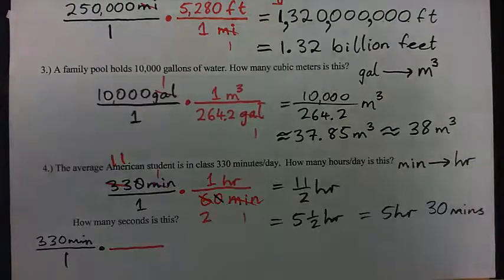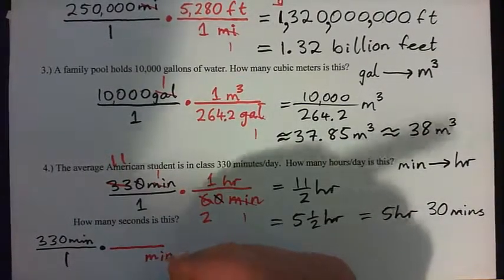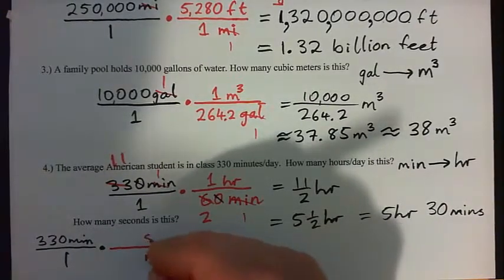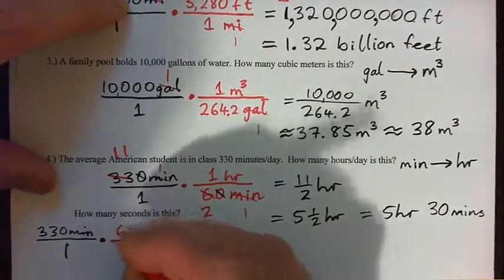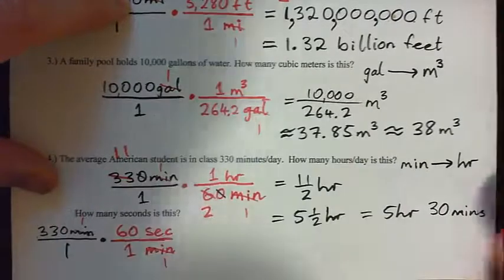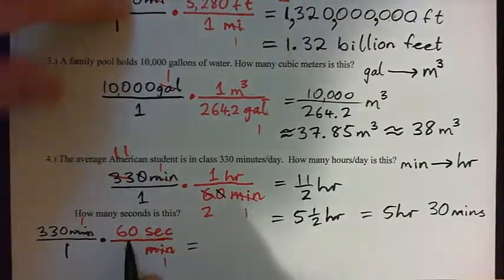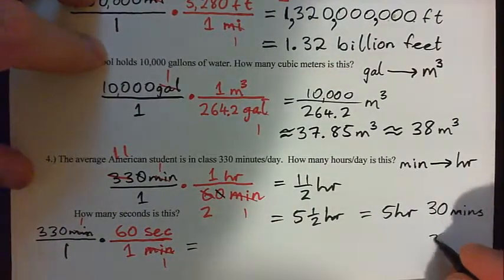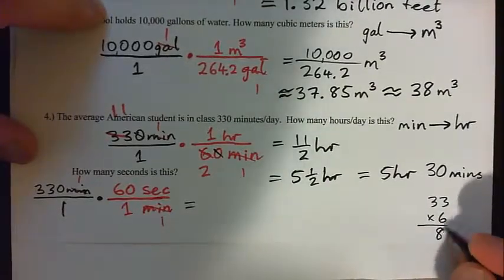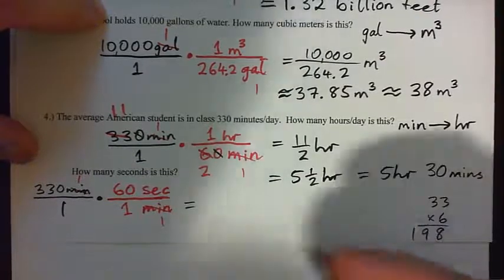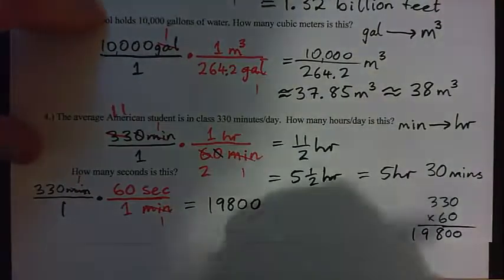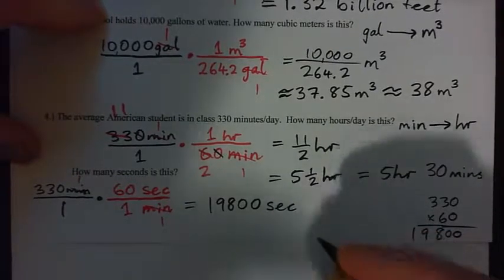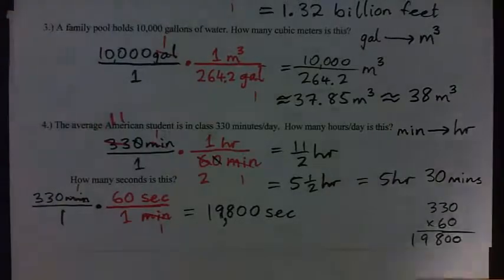We put minutes on the bottom to cross-cancel. We want to go to seconds — SEC. One minute equals sixty seconds, so 60 seconds goes on top and 1 minute on the bottom. The minutes cross-cancel. We get 330 times 60. That's 33 times 6 equals 198, but with two more zeros, giving us 19,800 seconds.